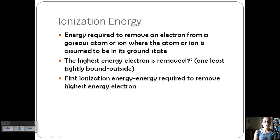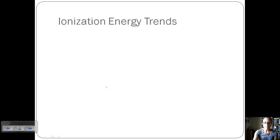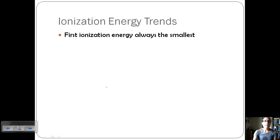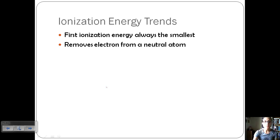The first ionization energy is the energy required to remove that highest energy electron — that first electron. Then we go to second ionization energy, and so on. The first ionization energy is always the smallest because that electron is on the outside, it's least tightly held, and it doesn't require as much energy to remove it.